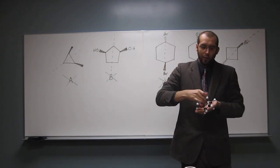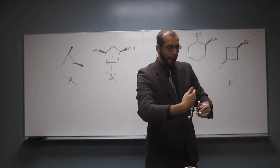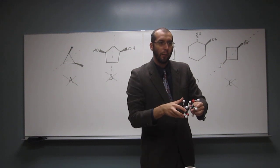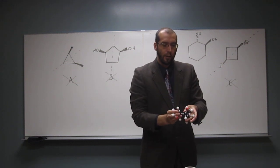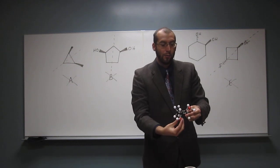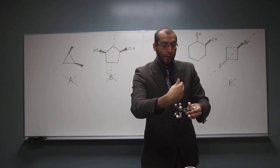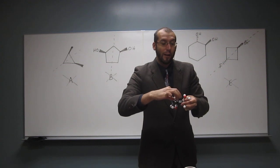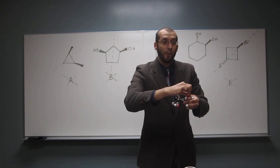If they were cis, then you could just cut it in half, like this, because this hydroxyl group would be up there, right? And you could just cut it in half, like that. But since this one's down and this one's up, you can't cut it in half, because this is a hydrogen, this is a hydroxyl group, okay?